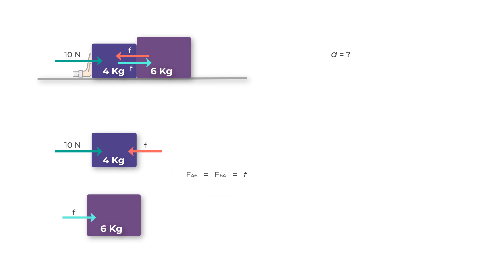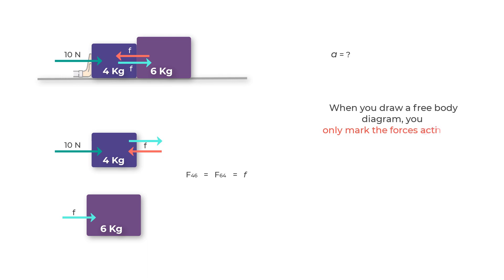Here are the free body diagrams of both masses. When you draw a free body diagram, you only mark the forces acting on the object, not what the object is exerting on any other mass or object — that is why we have not included the force that the 4 kilogram mass exerts on the 6 kilogram mass in the 4 kg free body diagram.